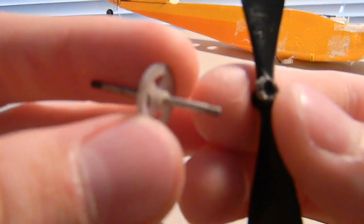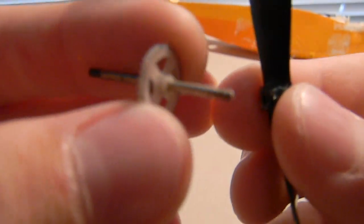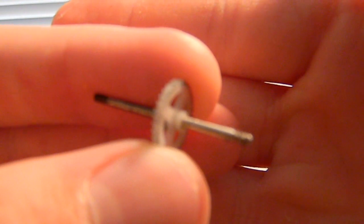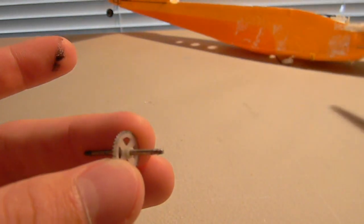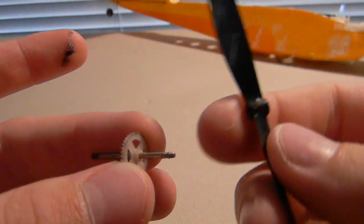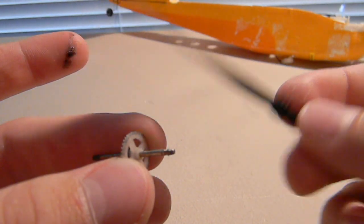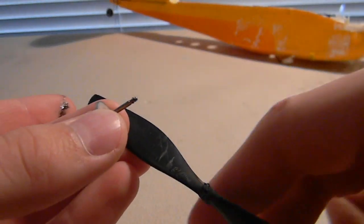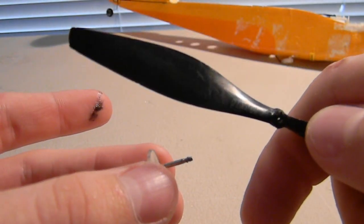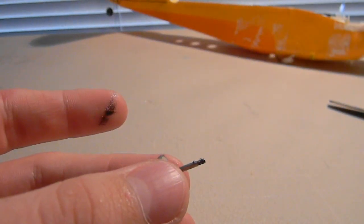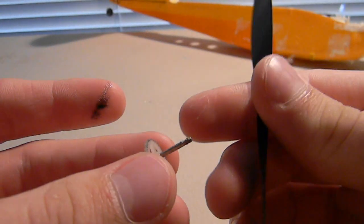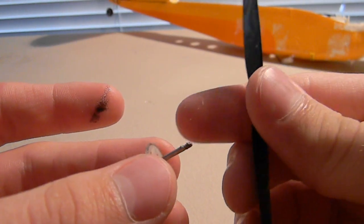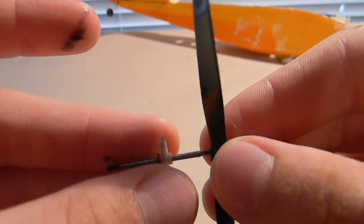Now that you have your prop unscrewed from the shaft, you'll go and grab your new prop. This one has less scrapes and looks better. I'll put the item number in the description below. They usually sell it at Hobby Town or other websites.